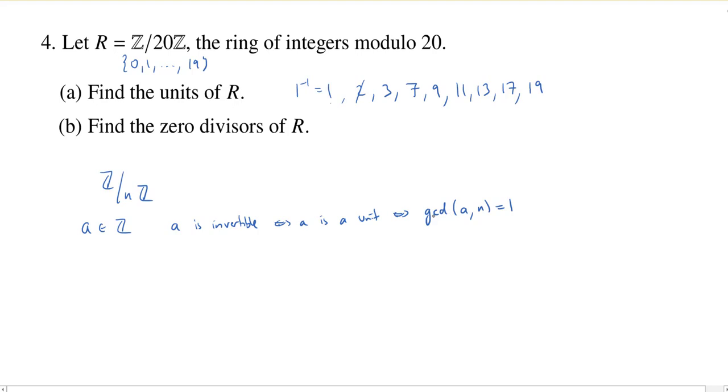So first, if the GCD is equal to 1, then we can use Bezout's lemma. So let's assume that the GCD of a and n is 1. So now by Bezout's lemma, we know that we can write 1 as a Z-linear combination of a and n. So there's going to exist some integers, say s and t, such that s times a plus t times n is equal to 1.